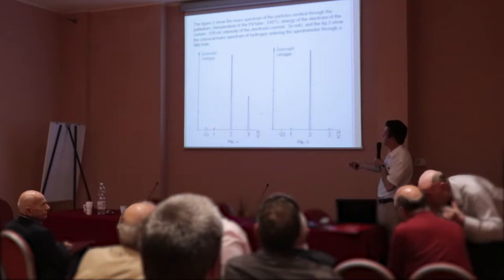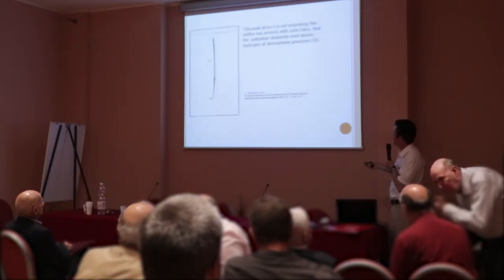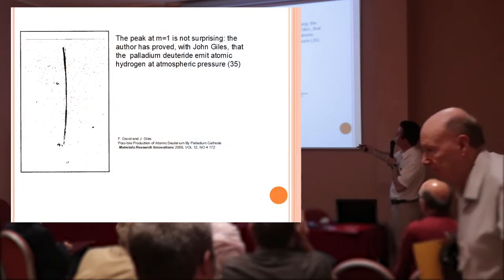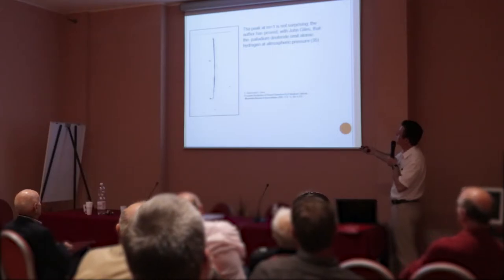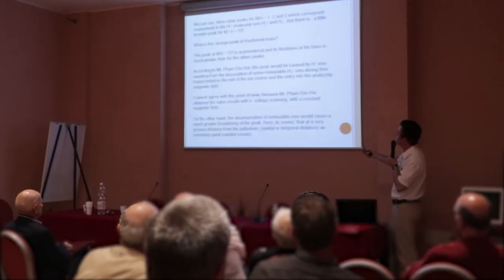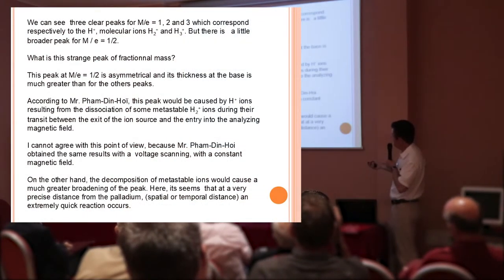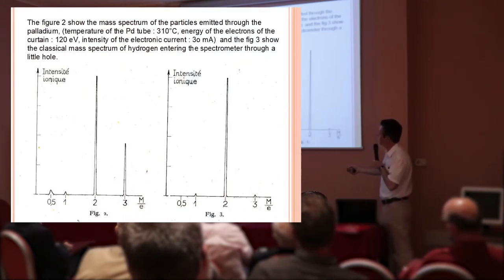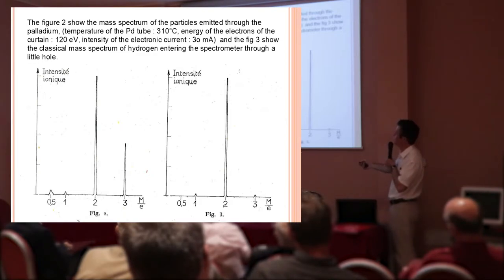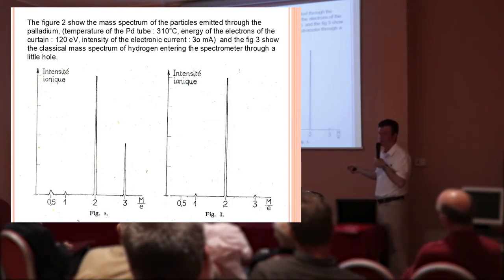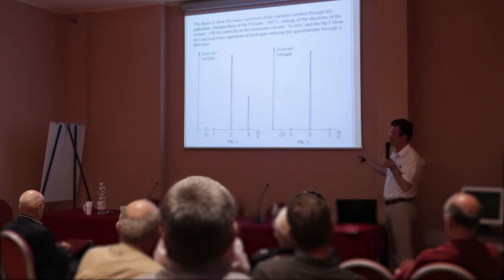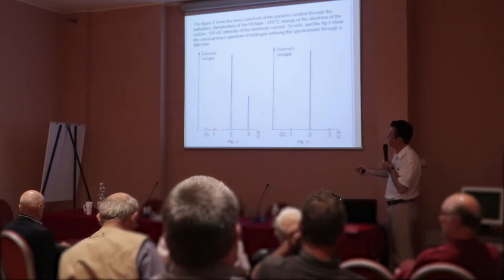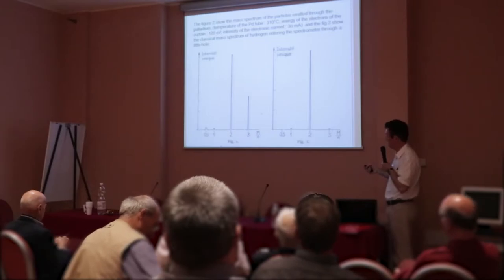This peak is easy to explain because we have demonstrated that a cathode of palladium charged with deuterium or with hydrogen emits atomic hydrogen at ambient temperature and ambient pressure. According to the author of the article, the little peak is due to the decomposition of metastable atomic ion H2+. For me, it's very difficult to accept this assumption because if there is a decomposition of metastable H2+ during the transit to the magnet, we will probably see a very broad peak relying on these two peaks. I have another hypothesis.